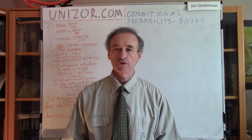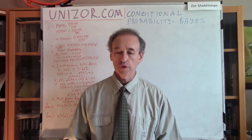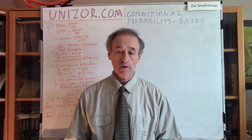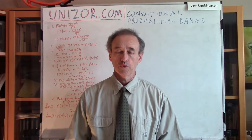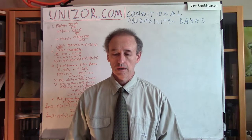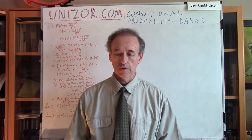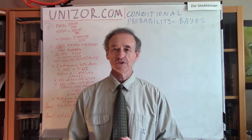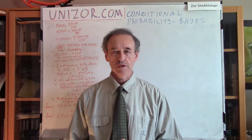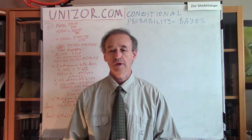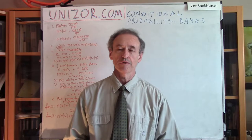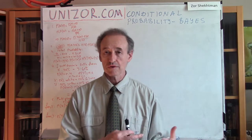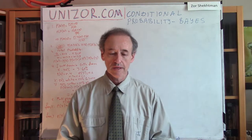Hi, I'm Zor. Welcome to UniZor Education. We continue talking about conditional probabilities, and this lecture is about a very interesting theorem, which was proved by a very long time ago living individual. Thomas Bayes, and he was an Englishman. He was actually a theologist, but he was really a very good mathematician as well. And so this very, very simple theorem has his name.